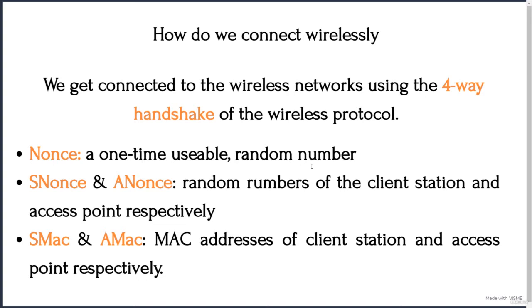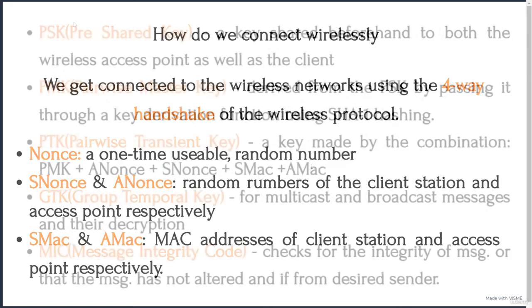The next terms are SNonce and ANonce. These are the same as nonce, but SNonce is generated by the client station making the request, and ANonce is generated by the access point fulfilling that request, respectively. SNonce stands for Station Nonce — the nonce of the node you're using — and ANonce stands for Access Point Nonce — the nonce of the access point you are trying to connect to. Similarly, SMAC refers to the station MAC address and AMAC refers to the access point MAC address.